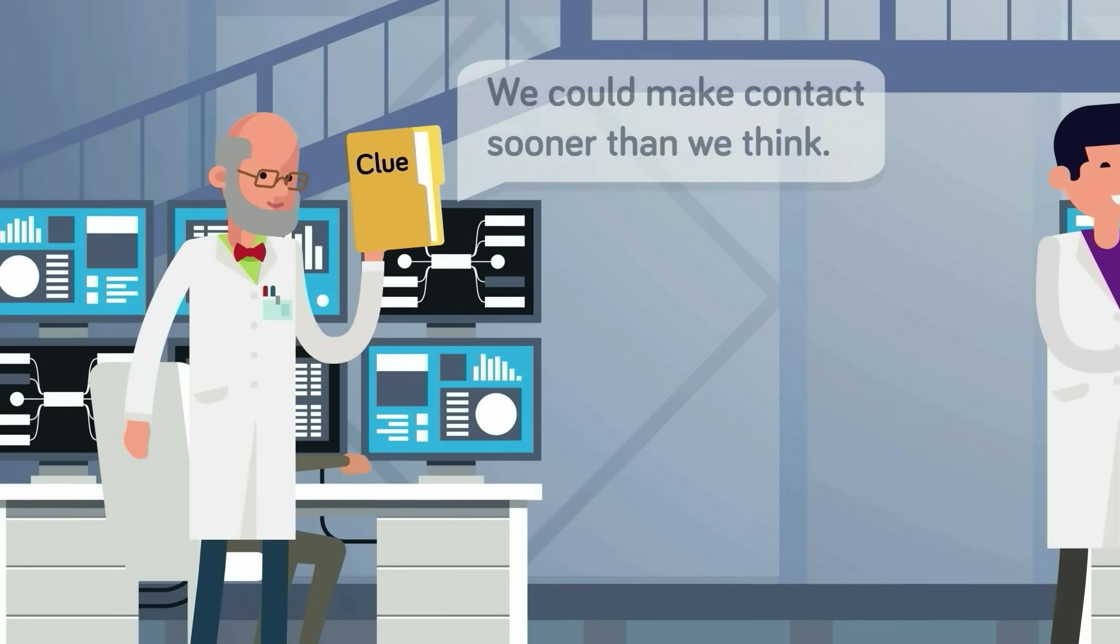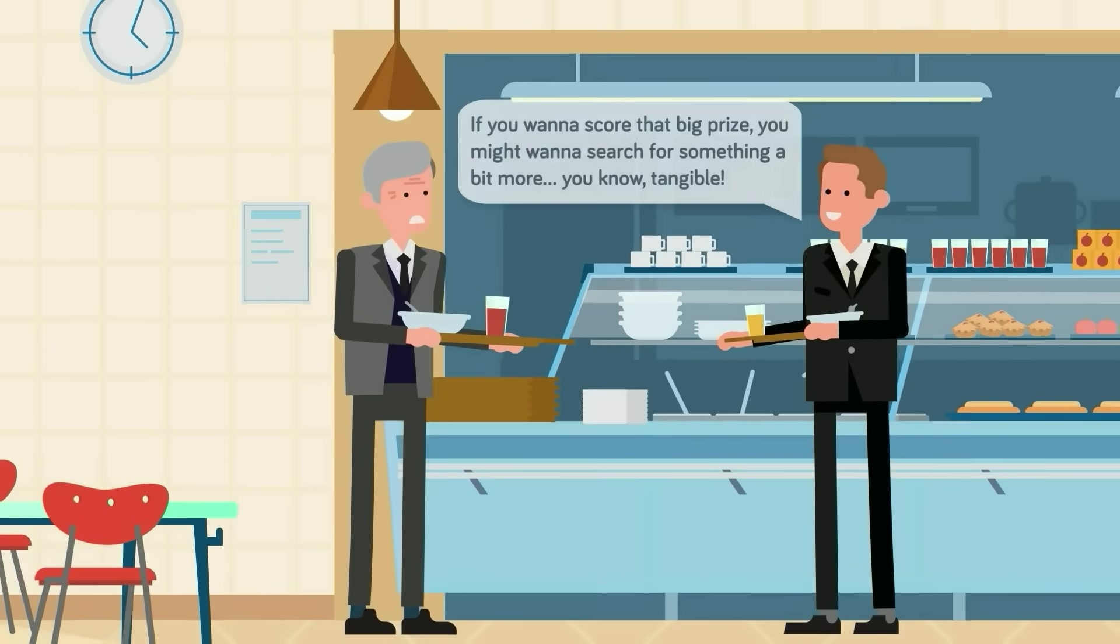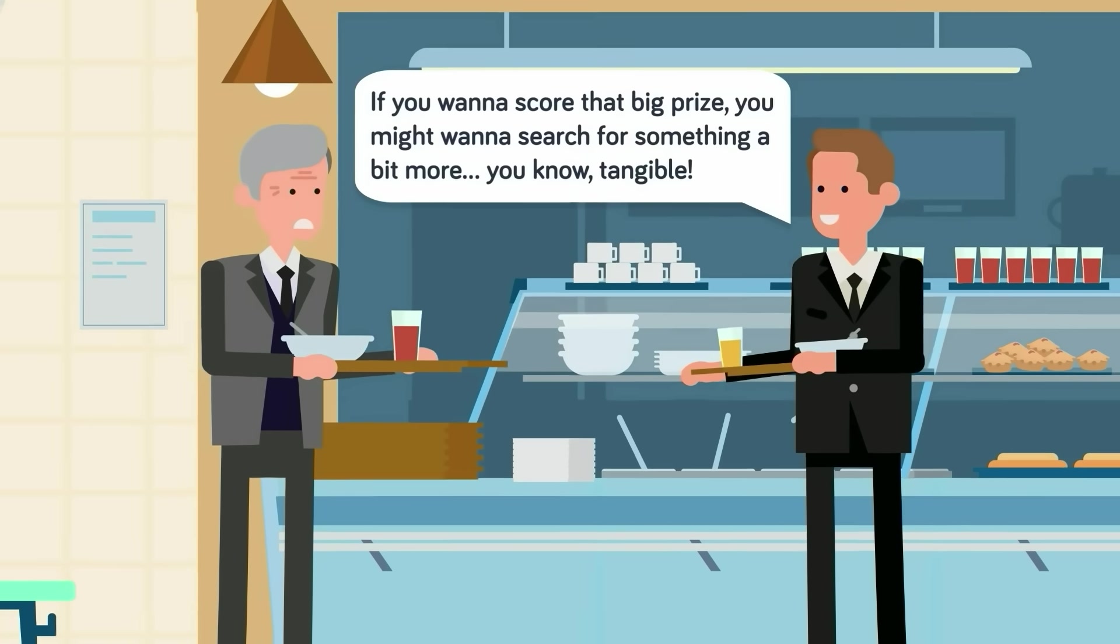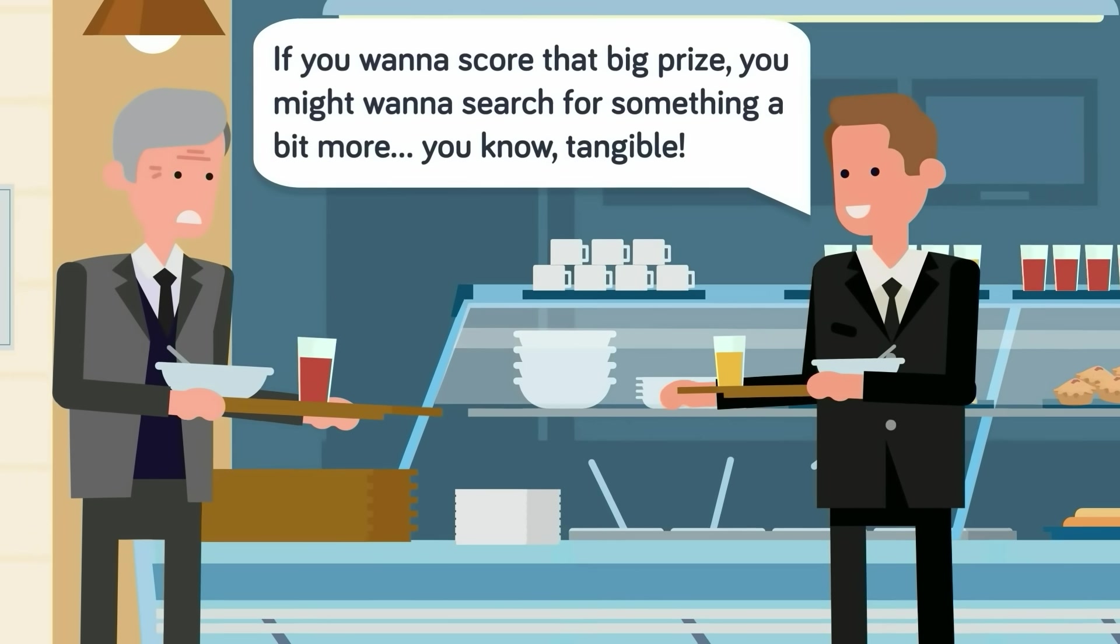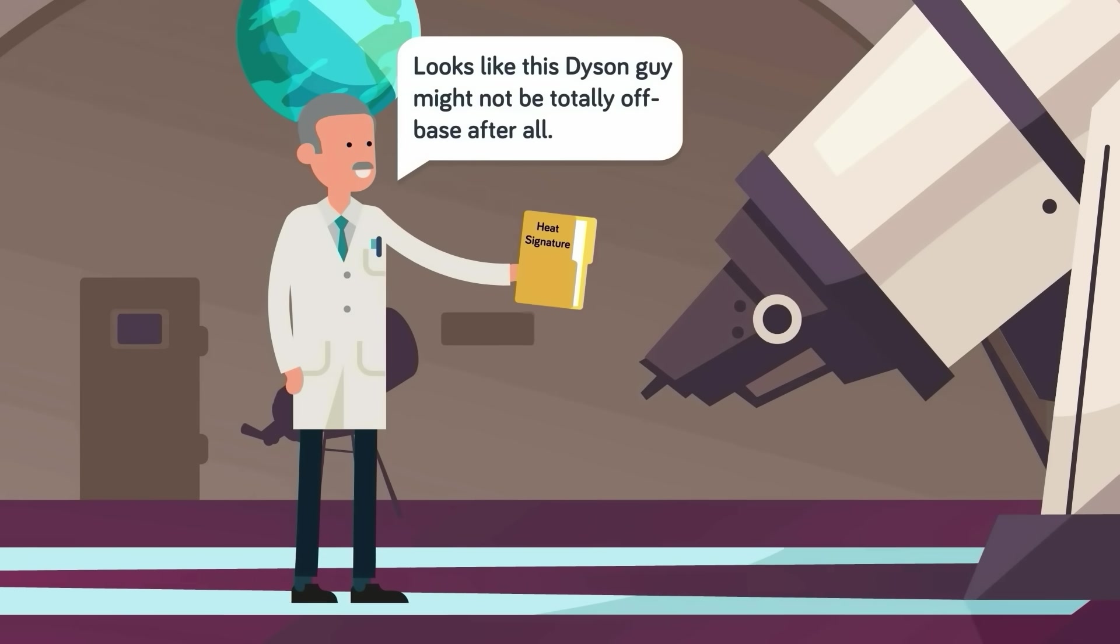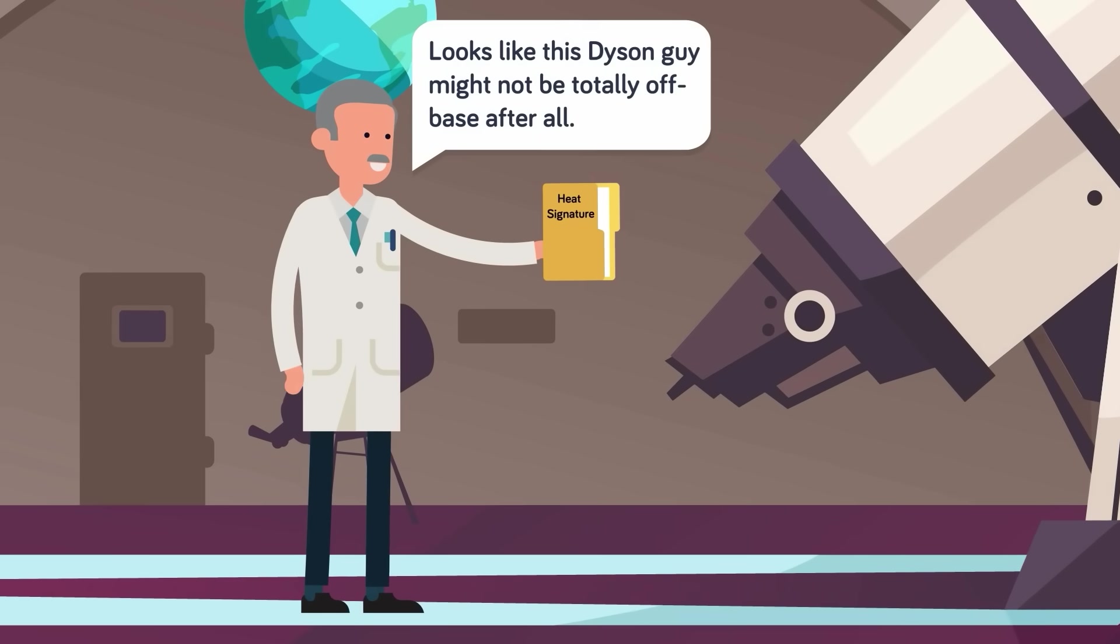Some scientists think they may have already found a clue. When Dyson first explained his theory, scientists laughed, telling him to go back to his more credible concepts that made him a candidate for the Nobel Prize, although he never won. But some found his theories intriguing, especially the idea that a search for unusual heat signatures could be the key to discovering extraterrestrial life.